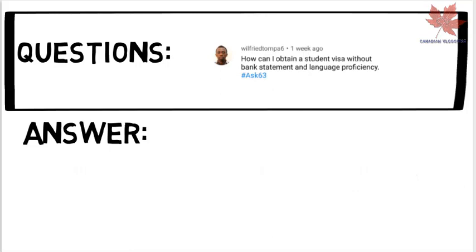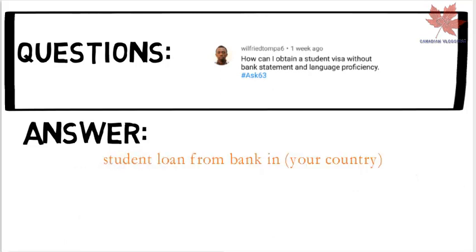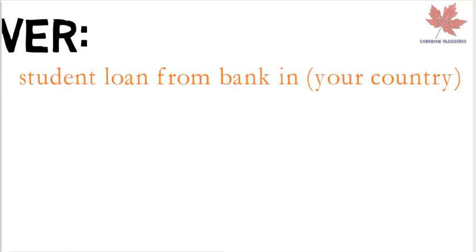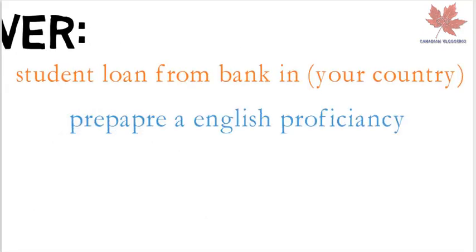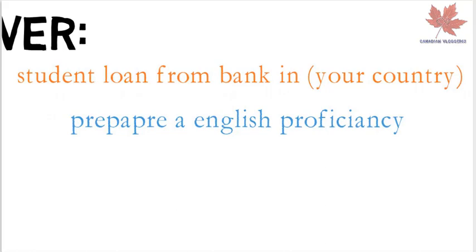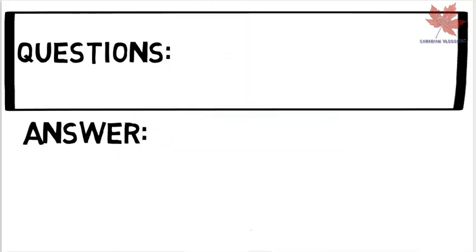Wilford is asking: how can I obtain a student visa without a bank statement and language proficiency? You can get student loans from a bank in your country, and prepare a proficiency letter from your last university or college to apply for a student visa. If you're a high-skill student with more than 80 percent marks, you can also apply for a scholarship.